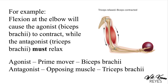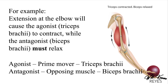So the agonist prime mover is the biceps brachii and the antagonist opposing muscle is the triceps brachii. Another example: extension at the elbow with weight-bearing. When the arm is extended, the agonist — the triceps brachii — contracts and shortens, while the antagonist — the biceps brachii — is lengthened and relaxed.